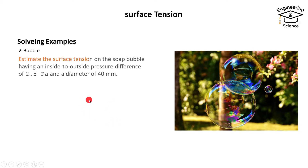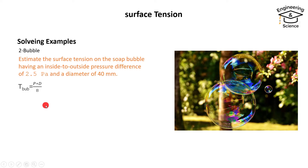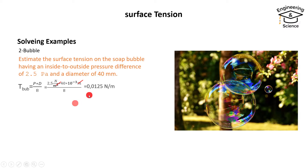For a soap bubble, the surface tension formula is: surface tension equals pressure multiplied by diameter over eight (σ = PD/8), because a soap bubble has two surfaces. Substituting the data, the units cancel and the result is 0.0125 Newtons per meter. That's all — I hope this was helpful. Have a nice time!